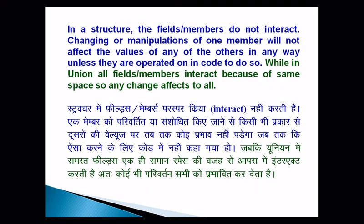In a structure, the fields and members do not interact — changing or manipulating one member will not affect the value of any of the others, unless they are operated on in code to do so. While in a union, all fields and members interact because they share the same space, so any changes affect all members.